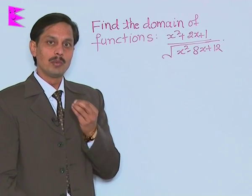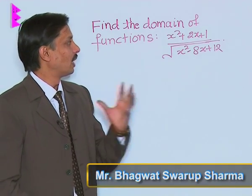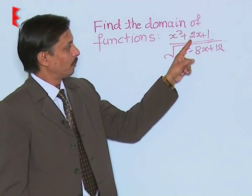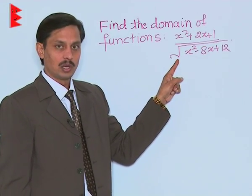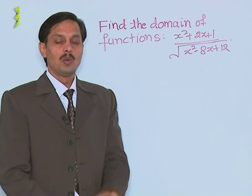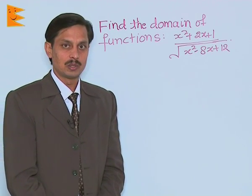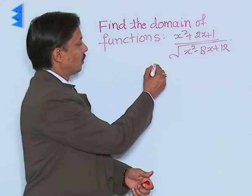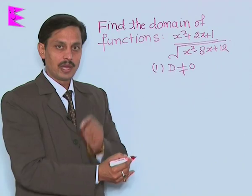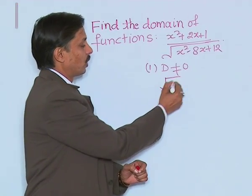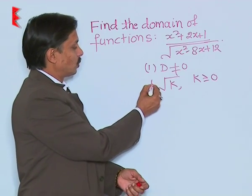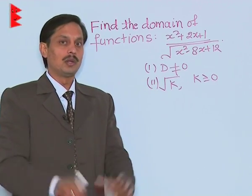Now I would like to discuss one more example where we calculate the domain of the function. The question is: find the domain of f(x) = (x² + 2x + 1) / √(x² - 8x + 12). To calculate the domain, we should rule out values as explained previously — the denominator should not be 0, and the value inside the square root must be greater than or equal to 0.